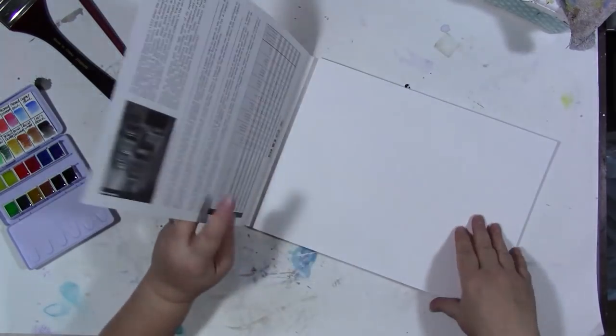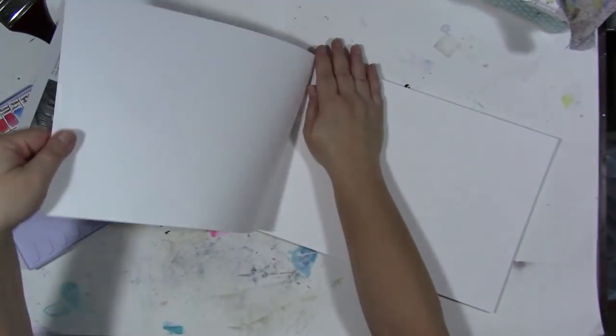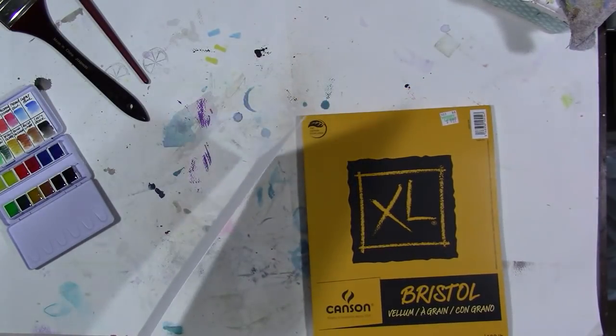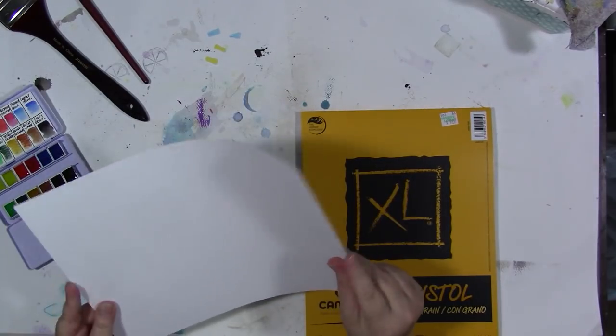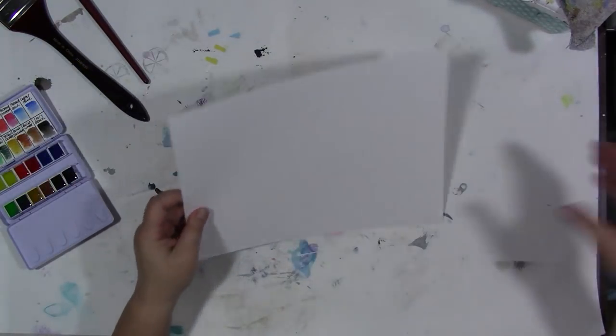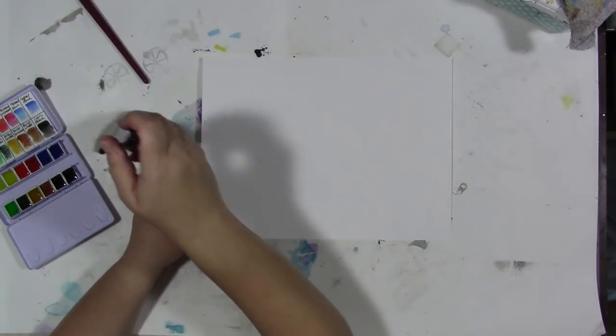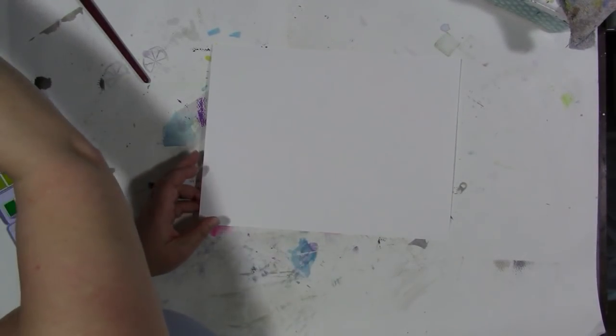This is Bristol vellum, Canson 100-pound paper. It's not the best for watercoloring on, but for this application it works just fine. Now I'm going to turn it over to the back side. Yes, the back side.